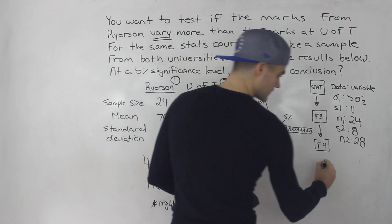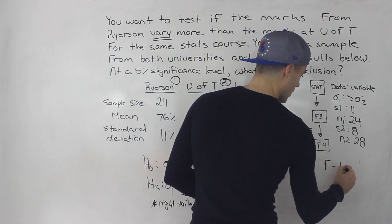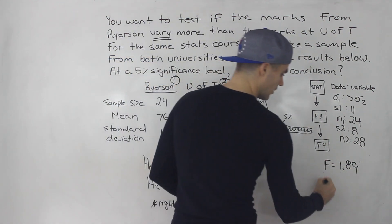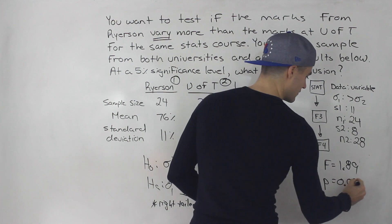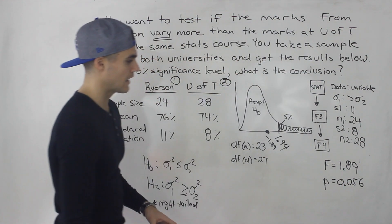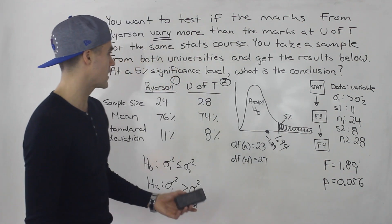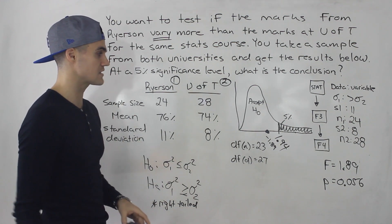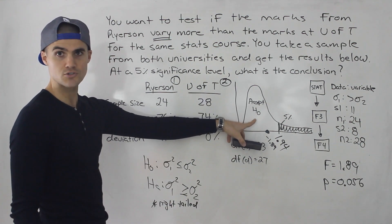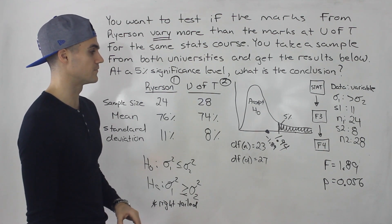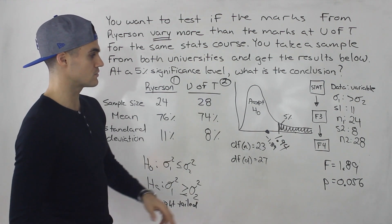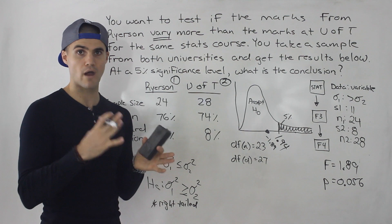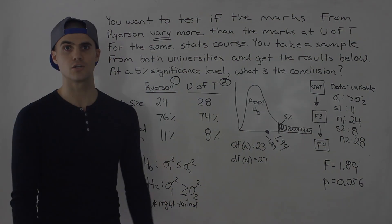When you execute the test on the calculator, you get an F value of 1.89 — which matches what we got manually. You also get a P-value of approximately 0.056. That P-value is greater than the significance level of 5%, so as usual when the P-value exceeds the significance level, it's in the acceptance region and we fail to reject the null. There's not enough evidence that the stats marks at Ryerson vary more than at U of T.